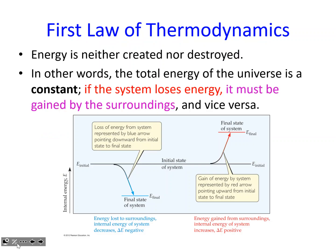Energy is neither created nor destroyed — the energy of the universe is constant. So if the system is losing energy, the surroundings are gaining that energy; it's equal in magnitude, and vice versa. If energy is lost to the surroundings, that same amount now went to the surroundings. If energy is gained from the surroundings, the system is absorbing that energy and the surroundings lose that exact same amount.